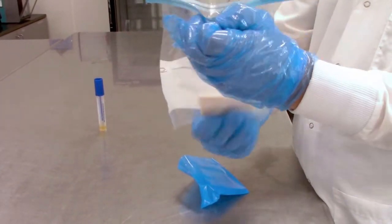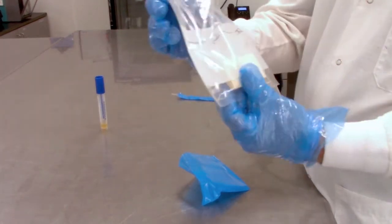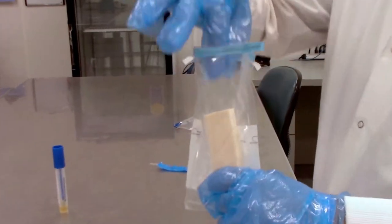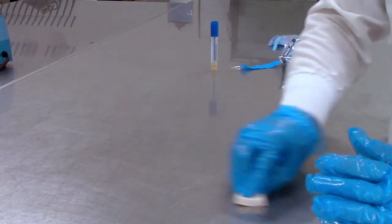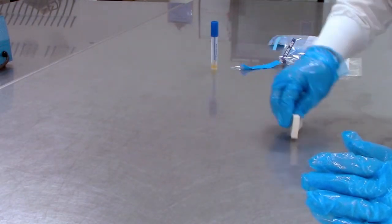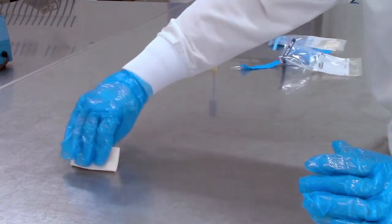Next open your bag and squeeze the sponge up to the top to carefully take out the sponge. Next swab a one foot by one foot area of your cleaned surface. Flip over the sponge and do the same area again.